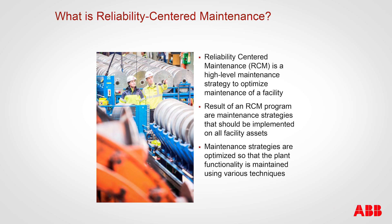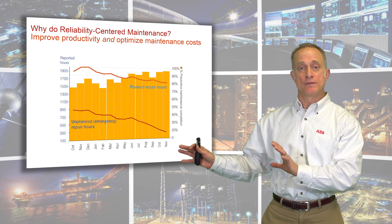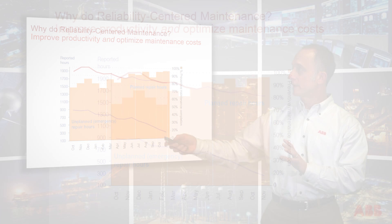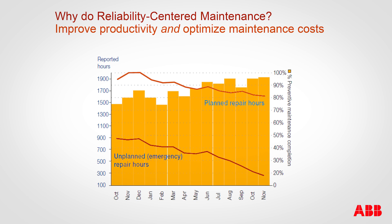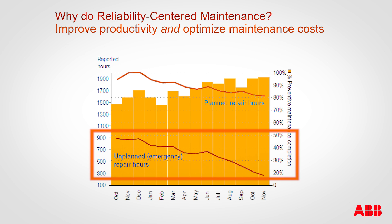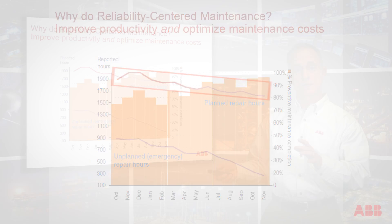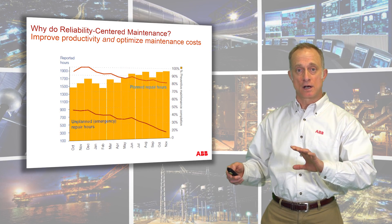These maintenance strategies are optimized to really provide the most overall efficient functioning of the plant. The notion of preventive maintenance is that the more preventive maintenance we do, the fewer unplanned maintenance activities will be required — those are break-and-fix, emergency repairs. What also happens is the more preventive maintenance we do, the actual planned maintenance hours also come down. We're just doing things more effectively and we see cost benefits across the board.